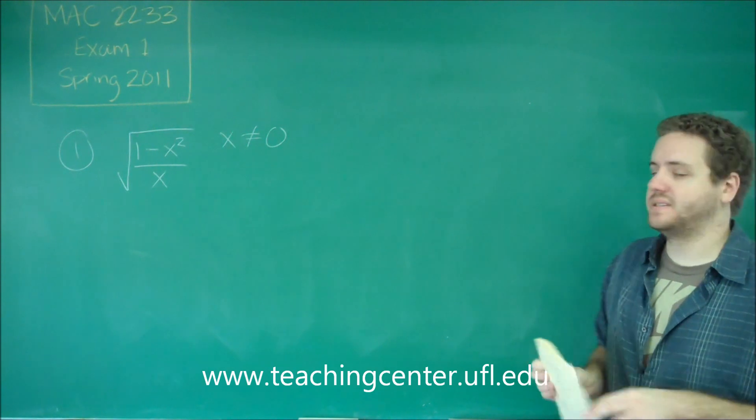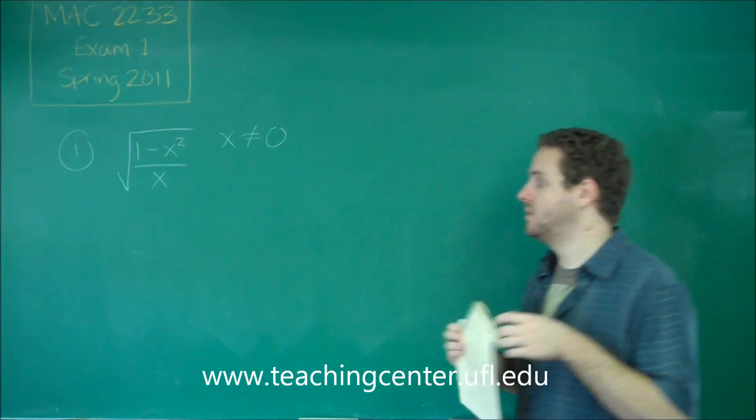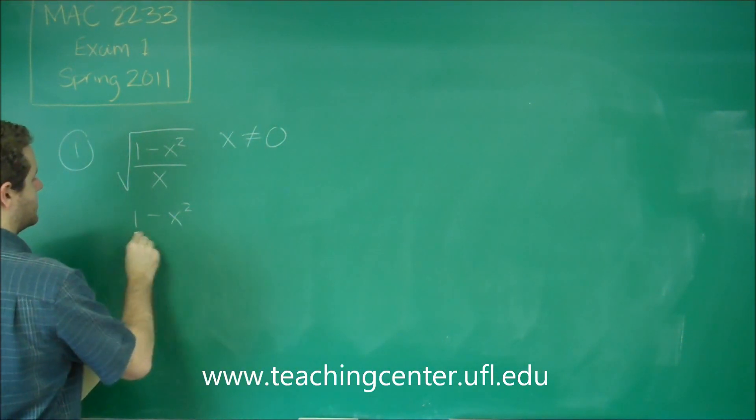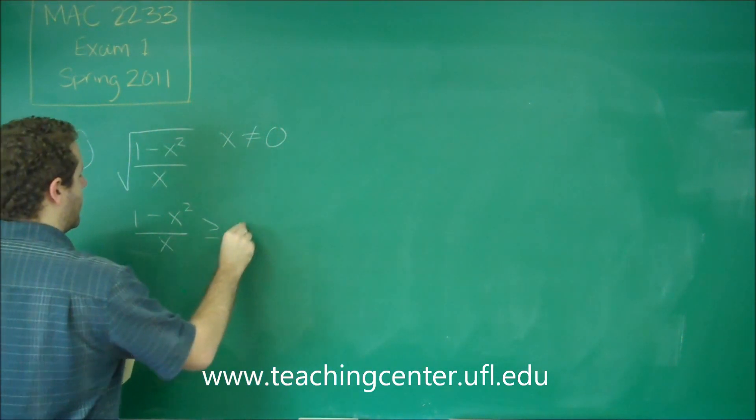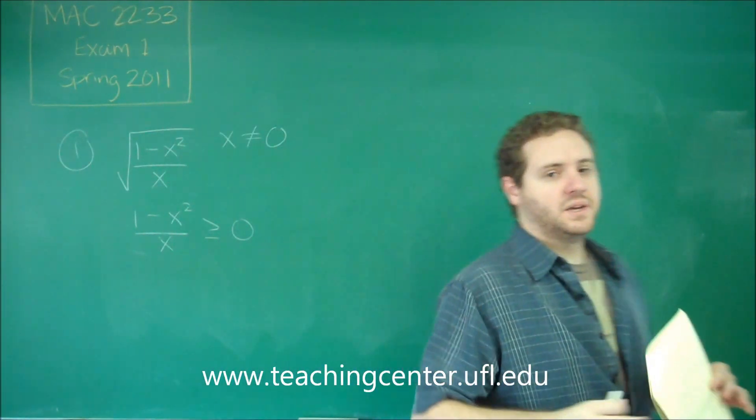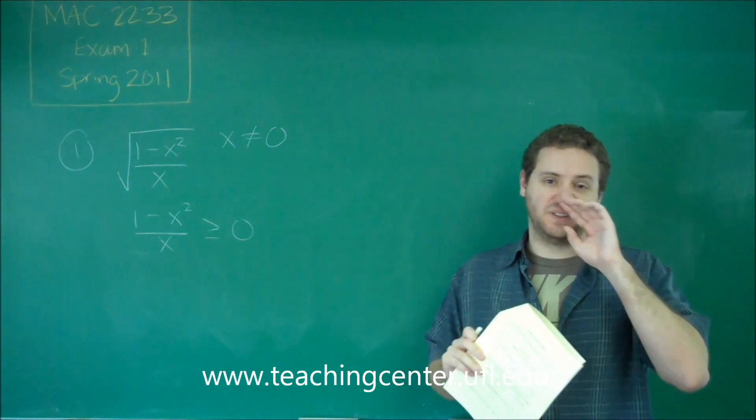Also, we have a square root. Everything inside a square root has to be greater than or equal to zero. So that's our last condition. We need to say, 1 minus x squared over x has to be greater than or equal to zero. And if we solve that inequality, coupled with the fact we knew that x couldn't be zero in the first place, we'll figure this out.